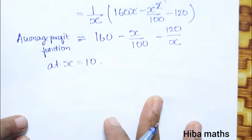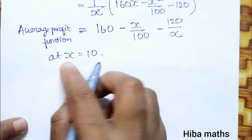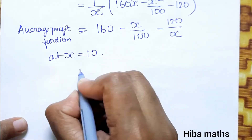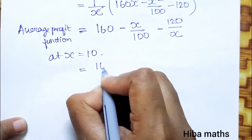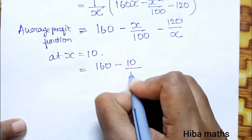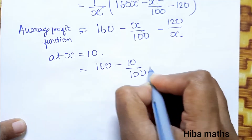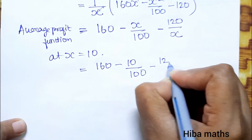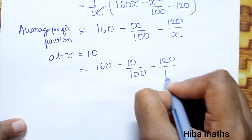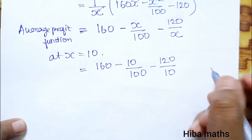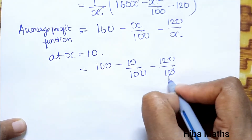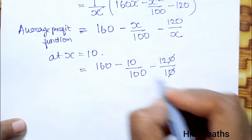At x = 10, the average profit = 160 - 10/100 - 120/10.